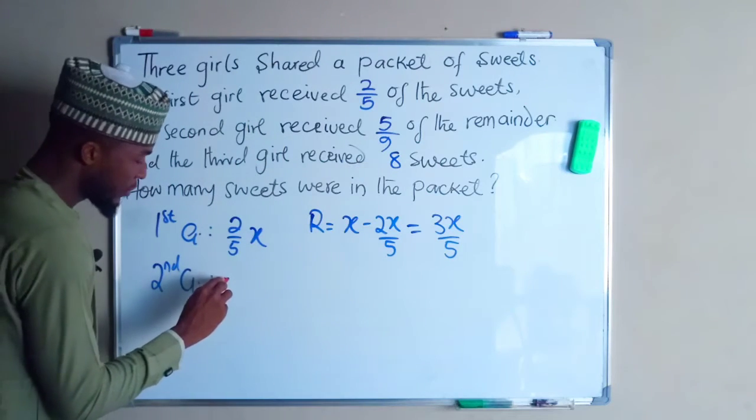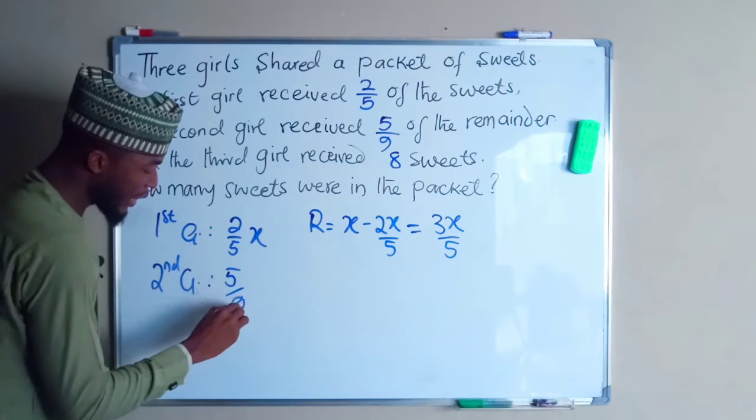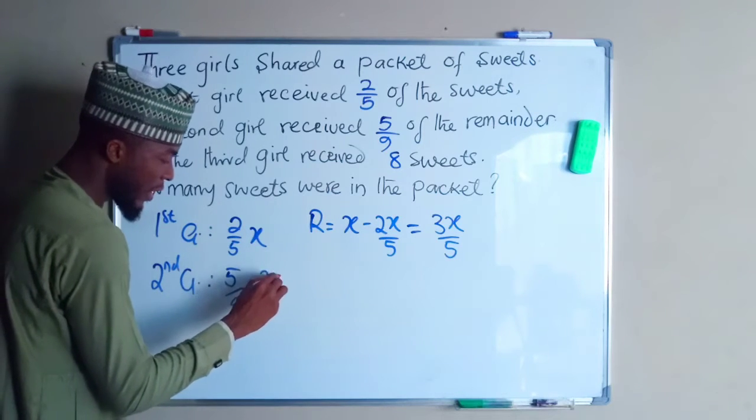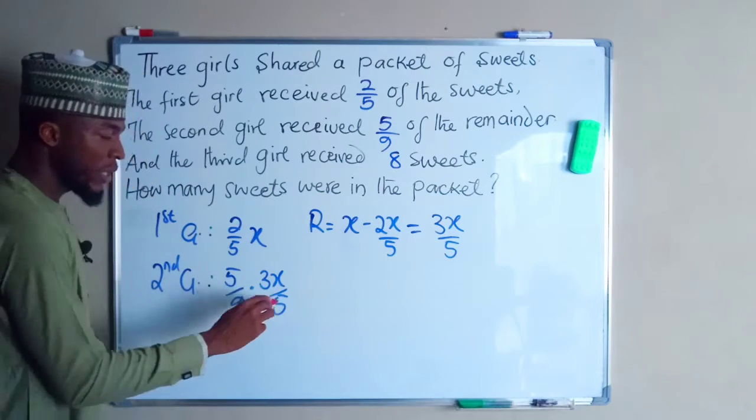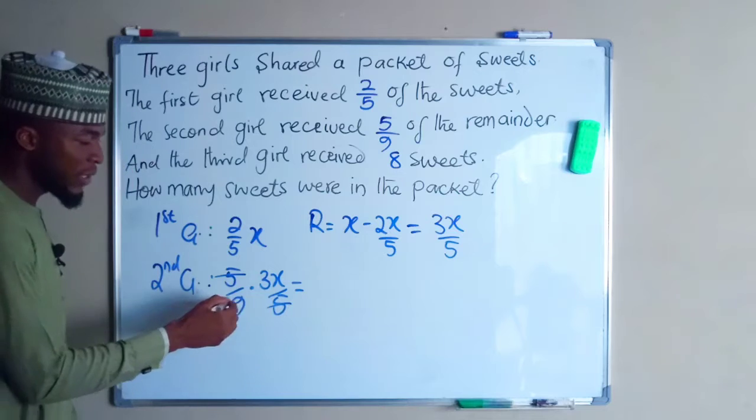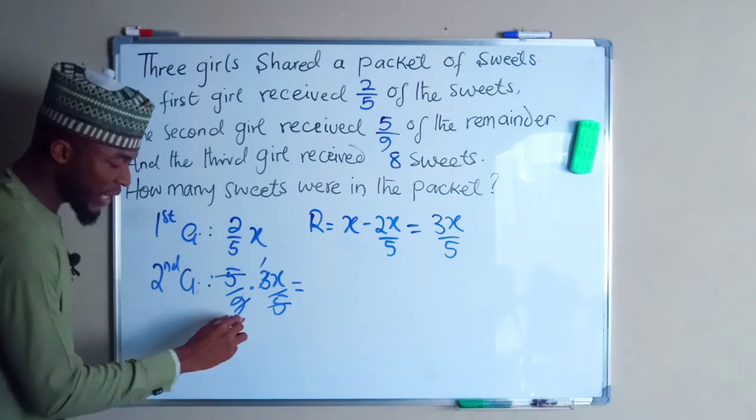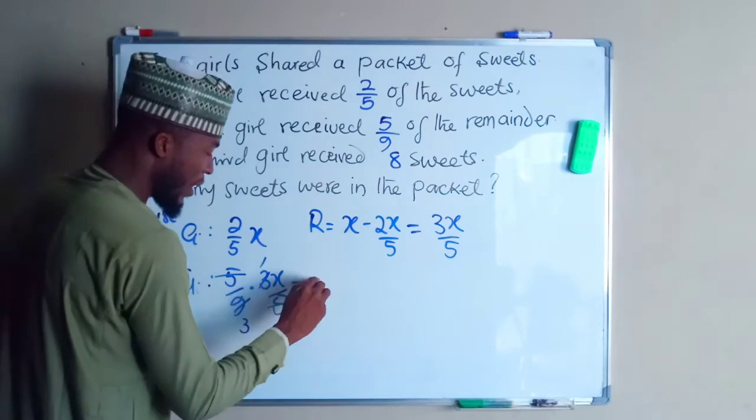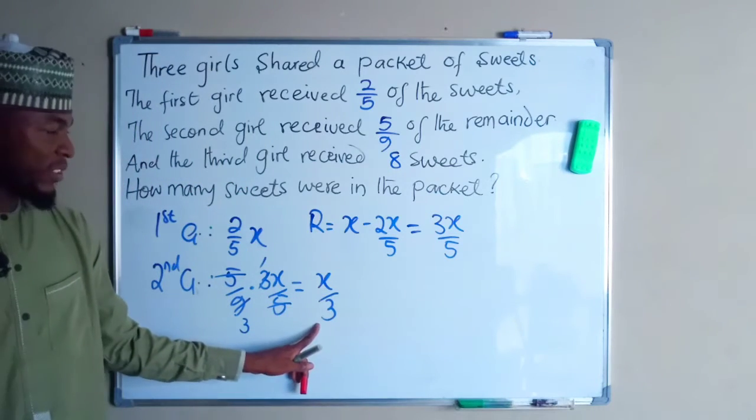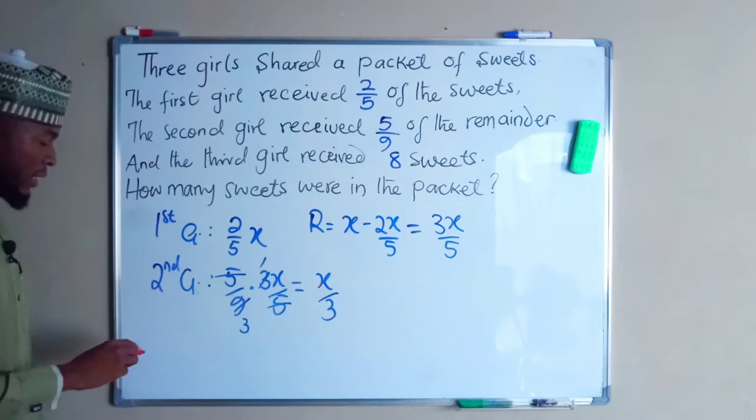So the second girl is going to take 5/9 of the remainder, which is 3X/5. If you simplify this further, 5 will cancel 5, and 3 can go into 9 three times. So we have X/3. This is the share of the second girl.